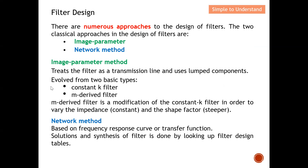I will show you an example of how to design a low-pass filter using the constant K filter. The M-derived filter is a modification of the constant K filter — it offers improved and slightly more controlled performance in terms of varying the impedance and shape factor. To understand what shape factor means, refer to the series one to four discussions on filter specification.